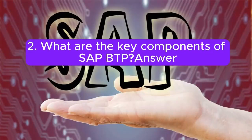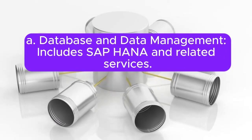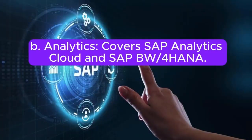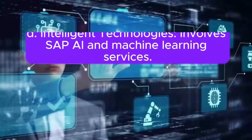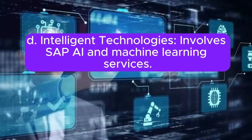Question 2: What are the key components of SAP BTP? The key components are: A) Database and data management, including SAP HANA and related services. B) Analytics, covering SAP Analytics Cloud and SAP BW for HANA. C) Application development, encompassing SAP Cloud Platform. D) Intelligent technologies, involving SAP AI and machine learning services.